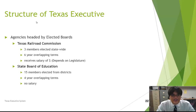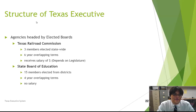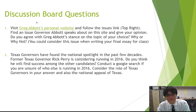For agencies headed by elected boards: the Texas Railroad Commission has three members elected statewide to six-year overlapping terms, with salaries determined by the legislature. The State Board of Education has 15 members serving four-year overlapping terms with no salary. If you have any questions about the executive branch or what any of the offices do, feel free to send them my way — most of this information is also available online.